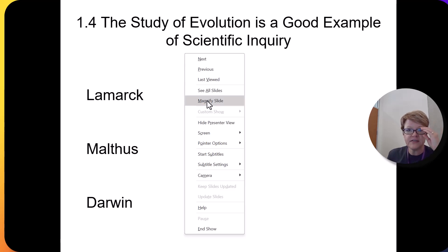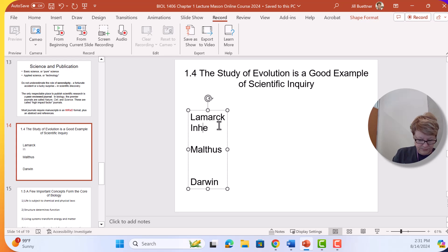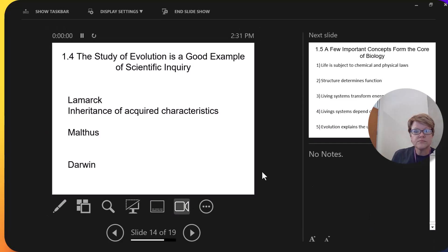So, Lamarck's theory of evolution is typically described as the inheritance of acquired characteristics. The inheritance of acquired characteristics. And like I said, that's wrong. So, you can put an X through that, but acquired means something you get during your lifetime. So, if you stretch your neck on purpose, then your children will inherit a stretched neck. That's wrong.